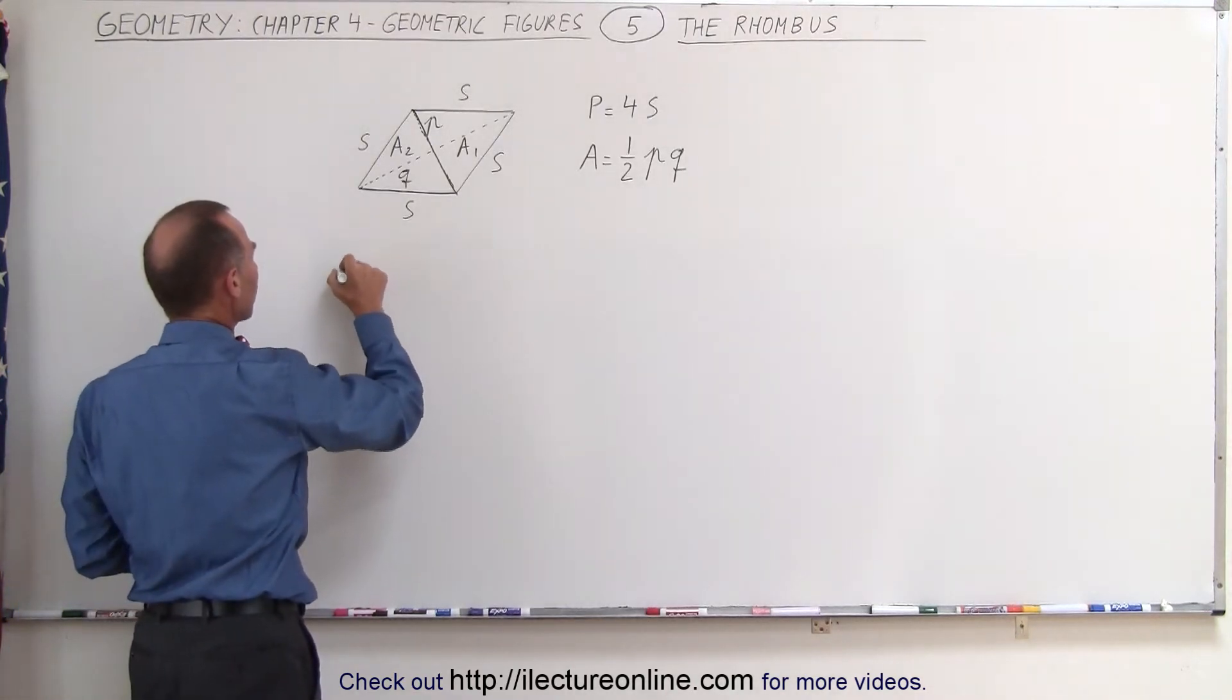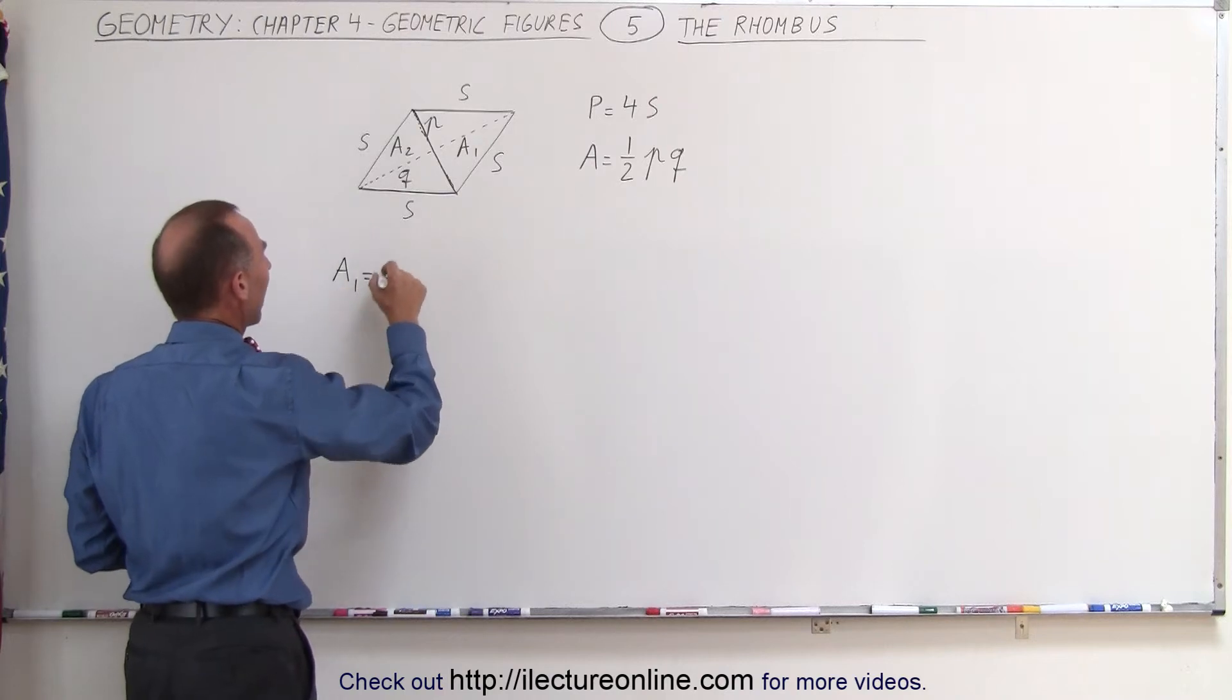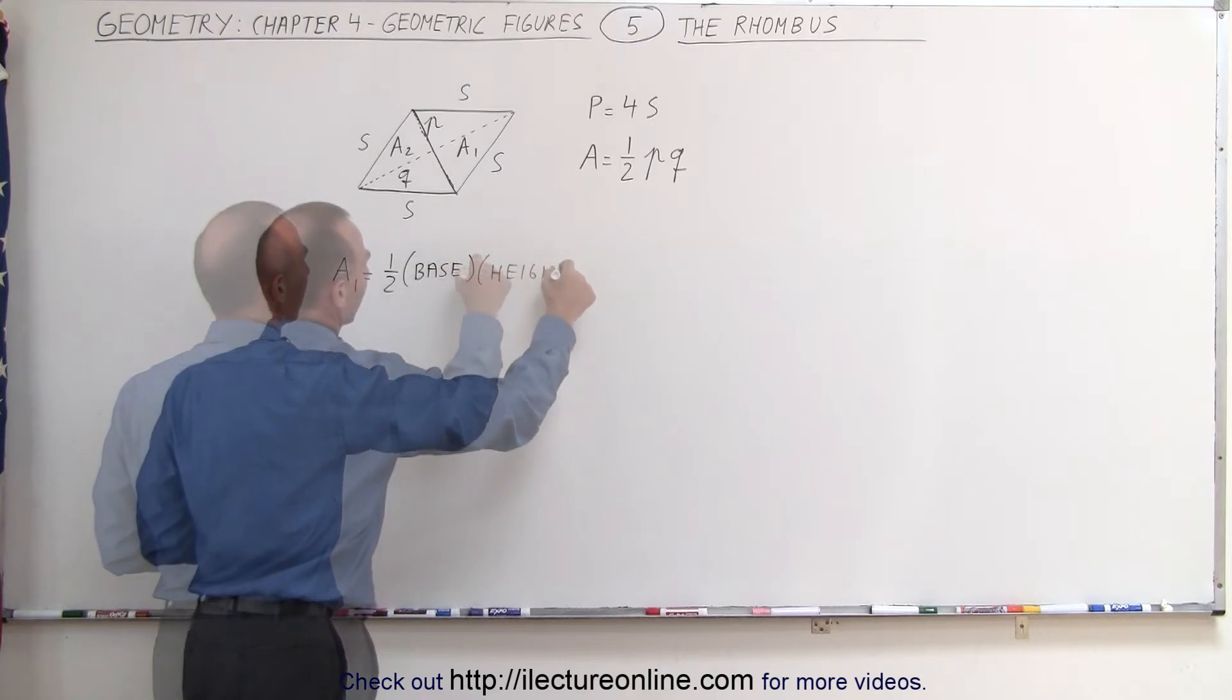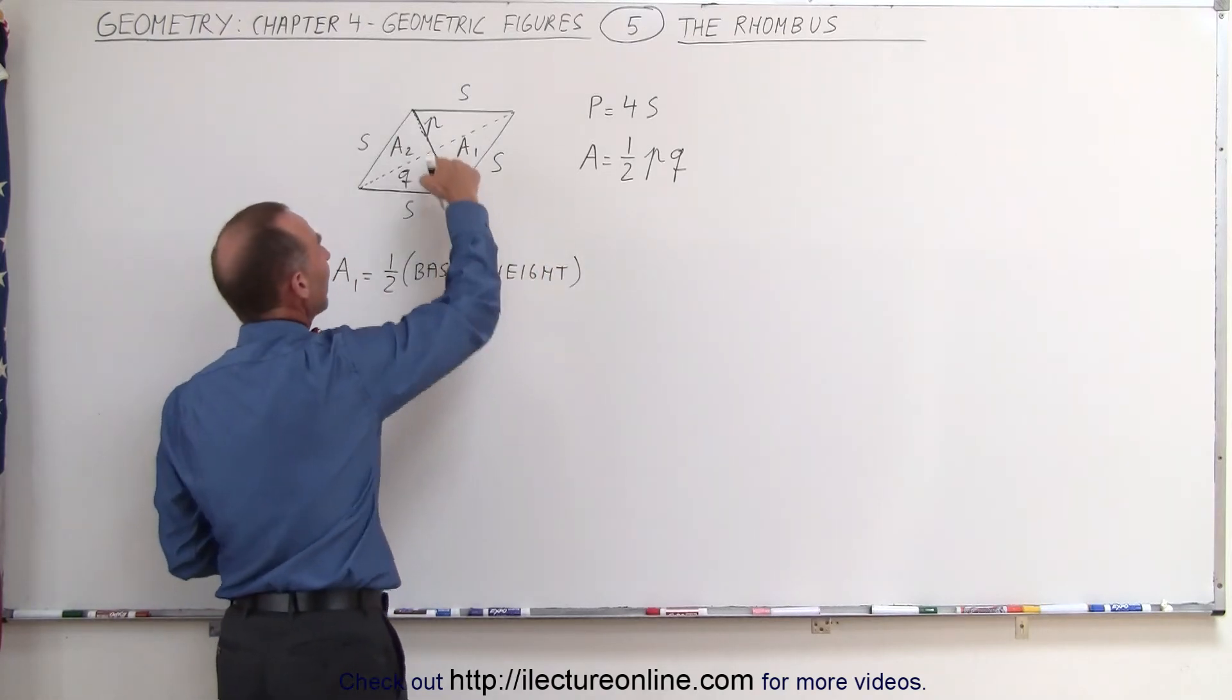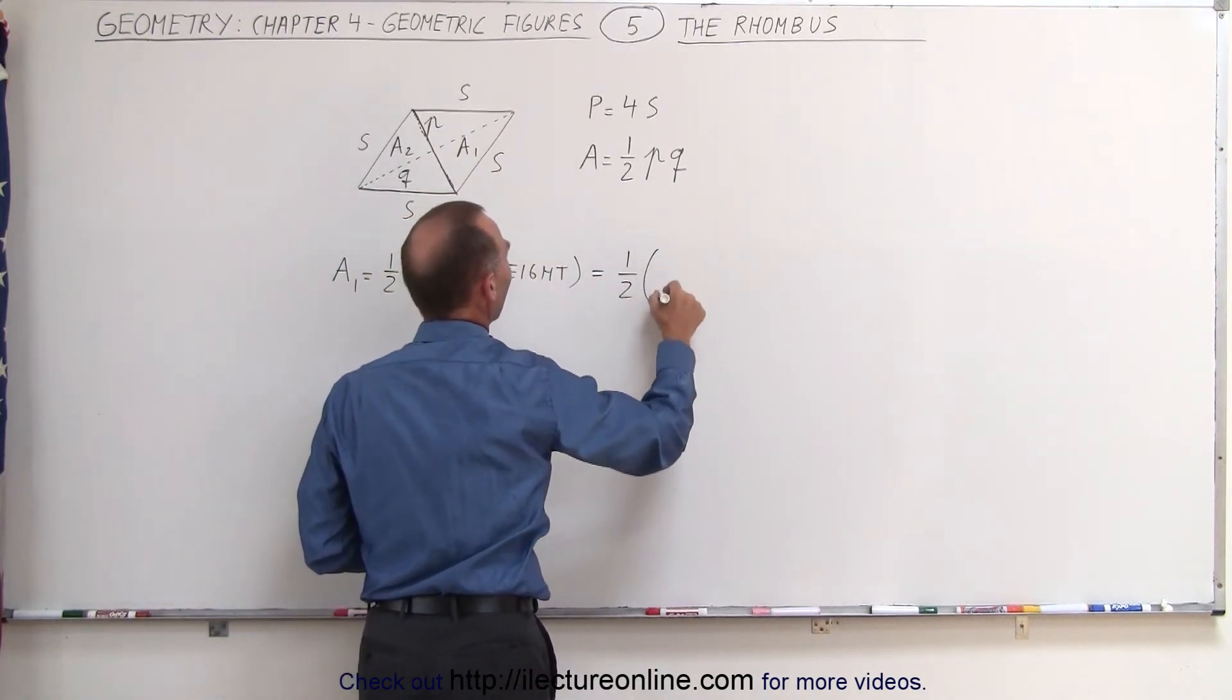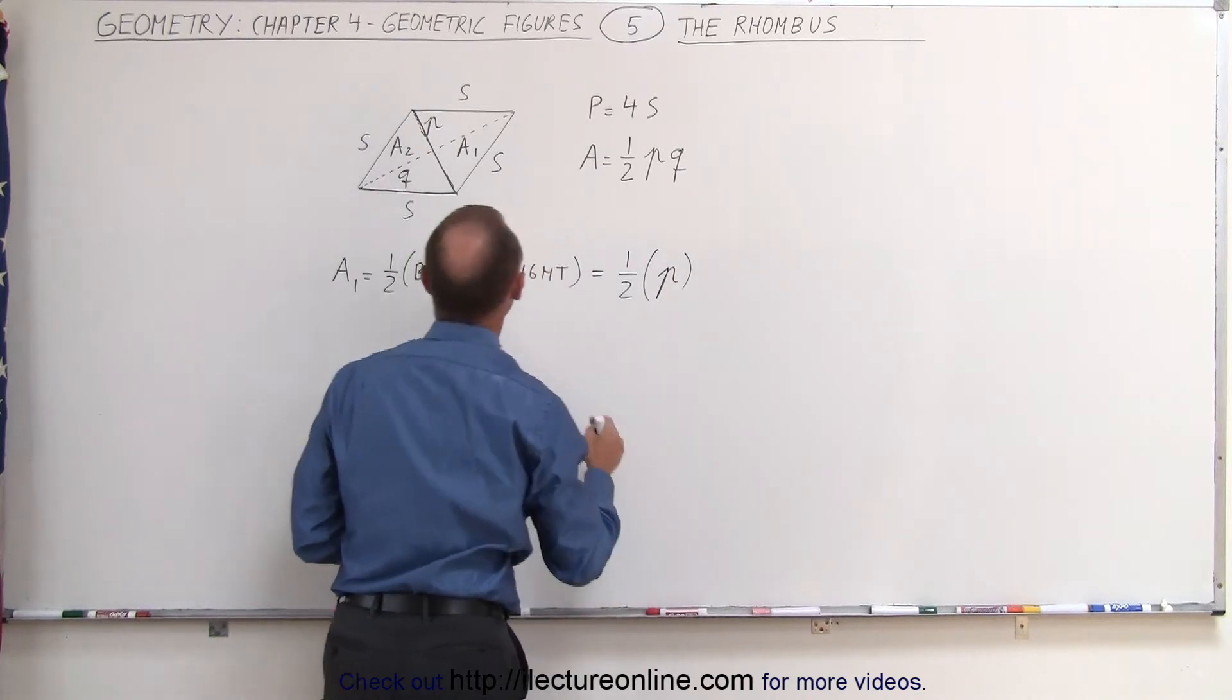Now the area of the first triangle, A1, is equal to half the base times the height. Now in this case the base of the triangle here will be equal to the length of the short diagonal P. So this would be one-half times P times the height,